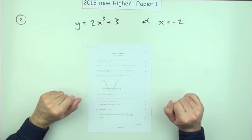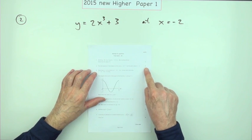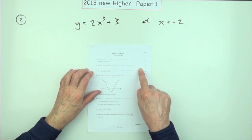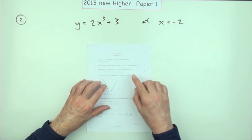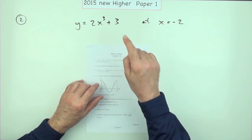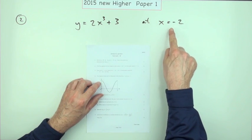Number two from the 2015 new Higher Paper 1 format question, and a fairly straightforward one. Again, the first two questions so far have been fairly easy. Find the equation of the tangent to this curve at the point where x is negative two.